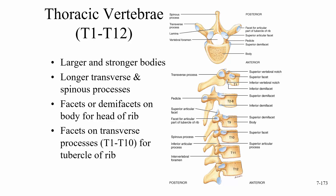In this lecture, we're going to look at the thoracic and lumbar vertebrae, as well as the sacrum and the coccyx. The thoracic vertebrae go from T1 to T12, so there are 12 thoracic vertebrae. They're going to have a larger and stronger body than we saw with the cervical, and they're going to have longer transverse processes and a much longer spinous process.